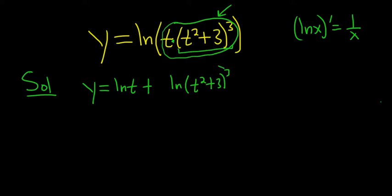Then you can take the 3 and put it in the front. So this is y equals natural log of t plus 3 natural log of t squared plus 3. That's the power rule for logs.